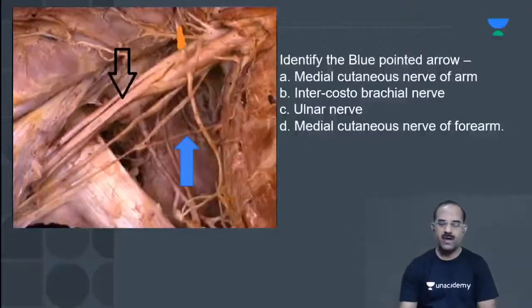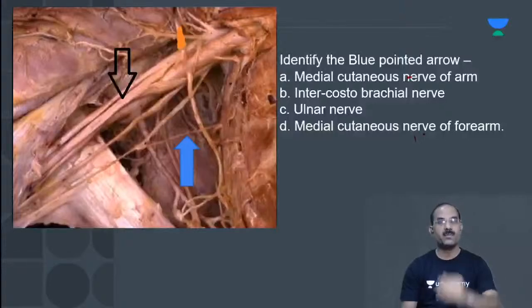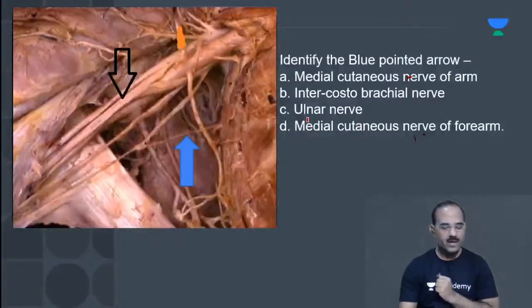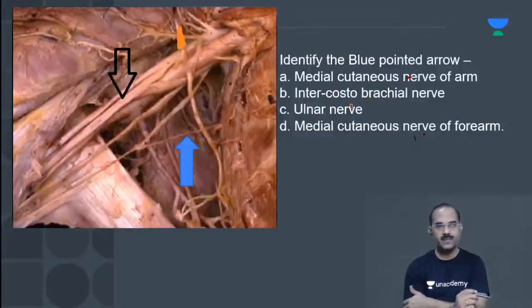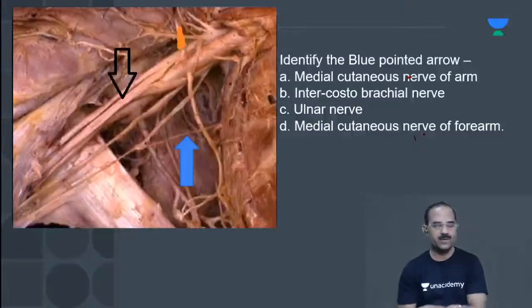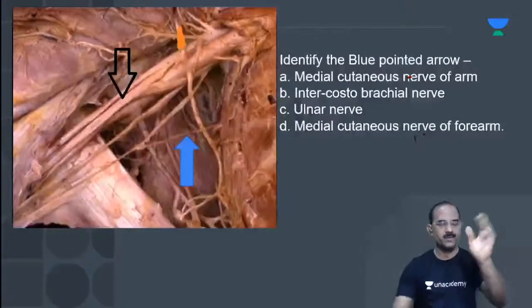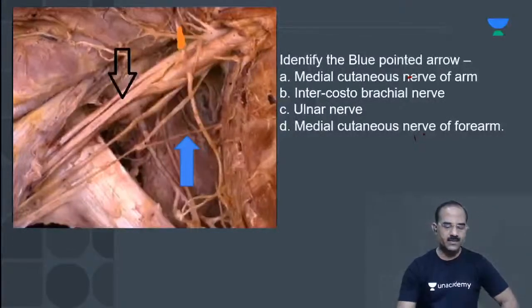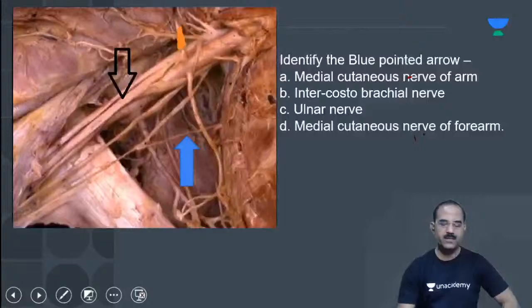Both the medial cutaneous nerve of arm and medial cutaneous nerve of forearm are branches of the medial cord. The ulnar nerve is also a branch of the medial cord. I hope everything is clear. We proceed to the next MCQ.